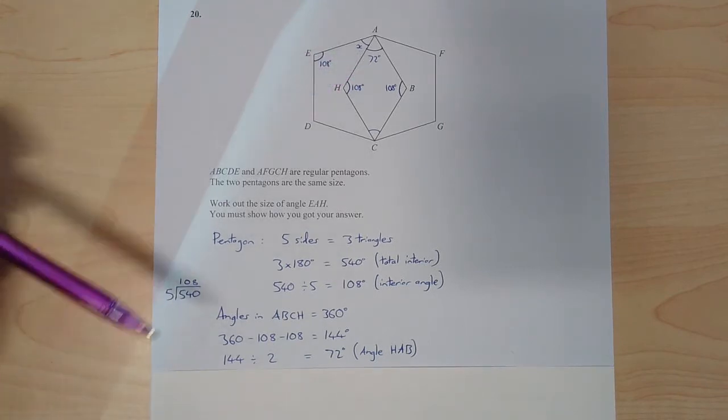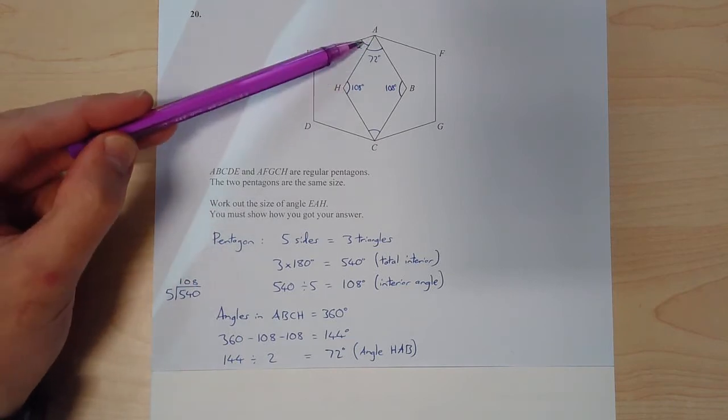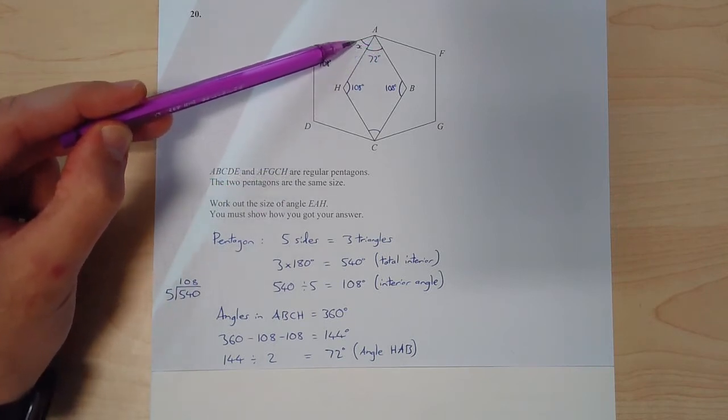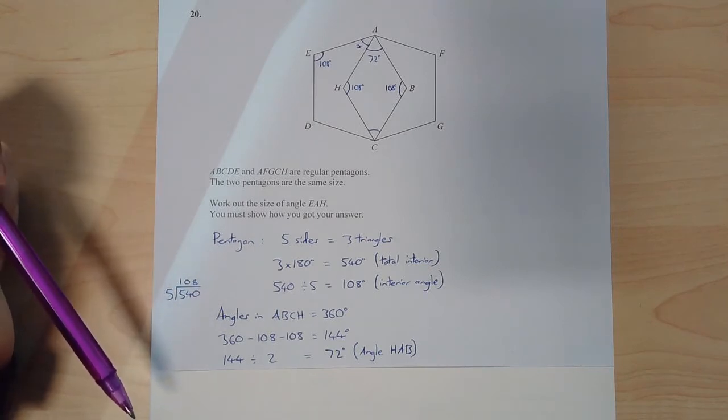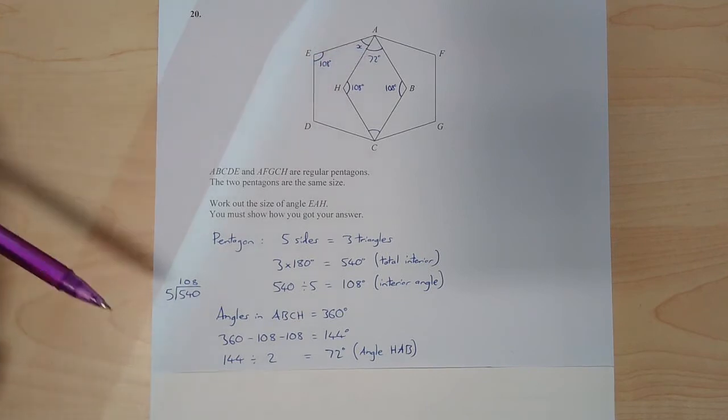Now how am I going to use that information? Well I want this one here, I've just labelled it X, E-A-H, this angle here. Well because I know that the total for an interior angle in a regular pentagon is 108. All this is 108 degrees. And because that bit is 72,